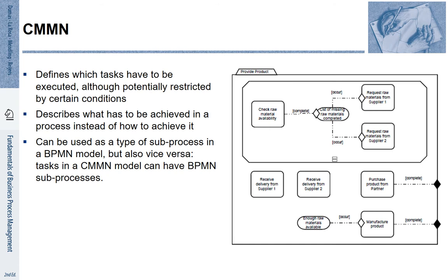Let's have a look at an example. CMMN defines which tasks have to be executed, although potentially restricted by certain conditions. It describes what has to be achieved in the process instead of how that is supposed to be achieved in detail. It can be used as a sub-process in a BPMN model and vice versa — not only can BPMN have sub-processes that are CMMN, but CMMN tasks can also have BPMN sub-processes.